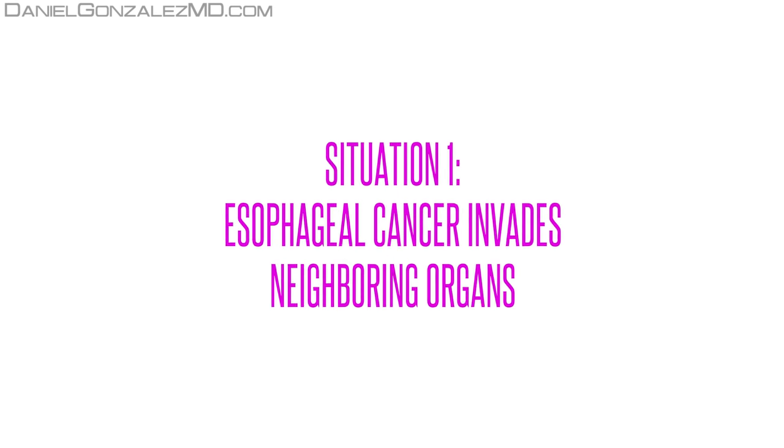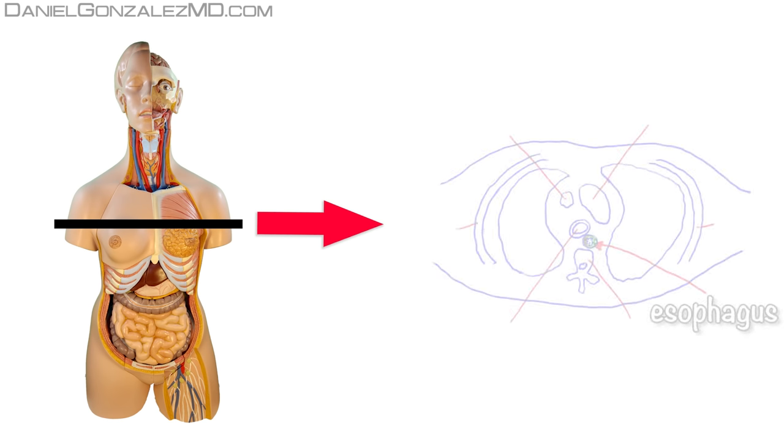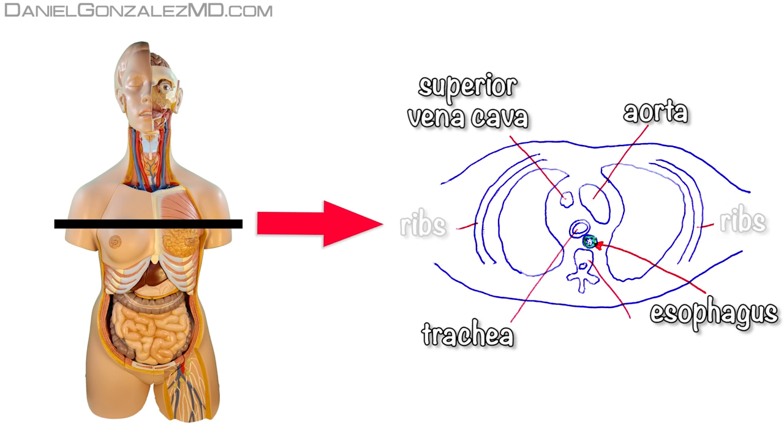Situation 1: Esophageal cancer invades neighboring organs. When the tumor grows forward, as esophagus is not separated from other organs by any mechanical barrier, esophageal cancer can infiltrate neighboring organs, which will cause the appearance of symptoms in them.